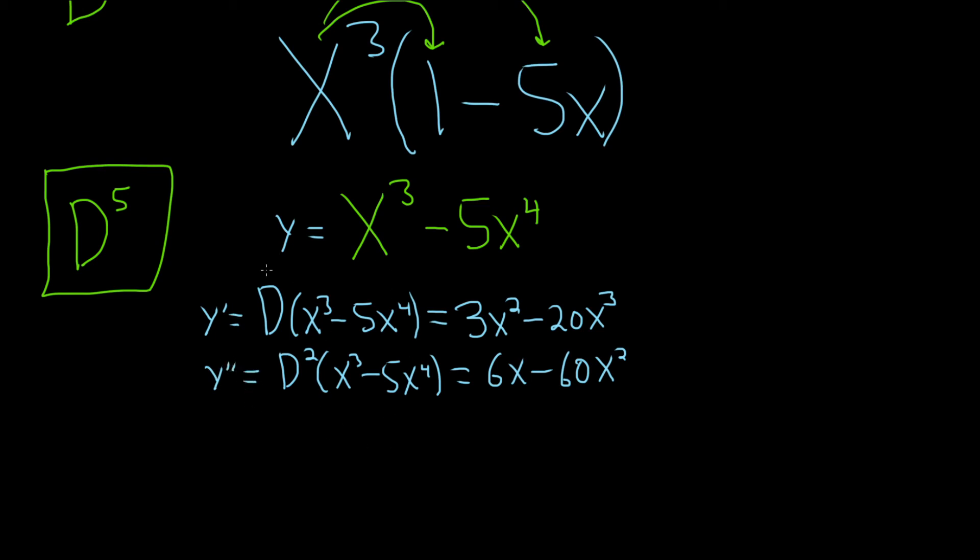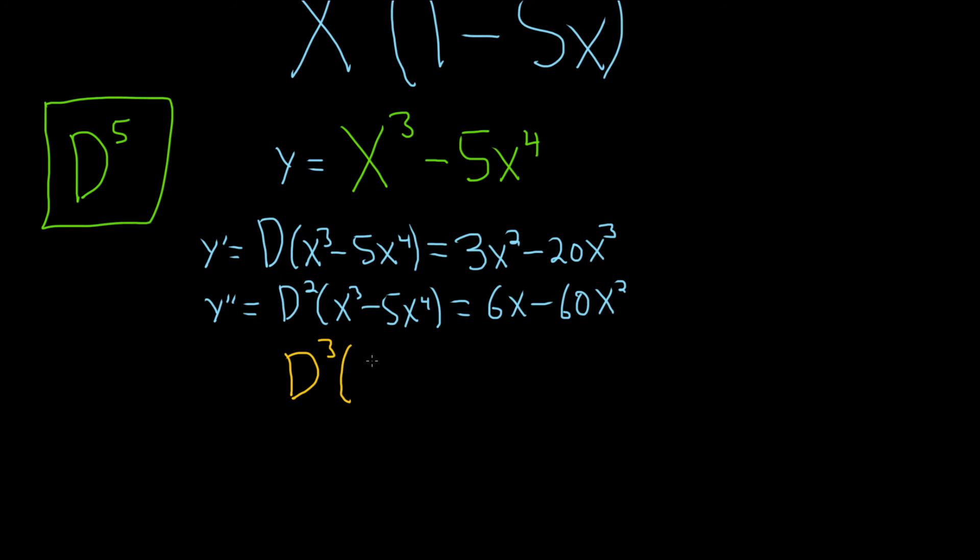So D cubed, the differential operator notation of x cubed minus 5x to the fourth. So this would be 6 minus, and then 2 times 60 is 120, so 120x.